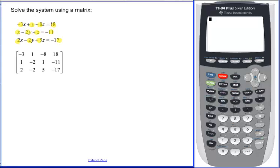And you can see 3, 1, 2. Here's negative 3, 1, 2. 1, negative 2, negative 2. Here's 1, negative 2, negative 2. 1, negative 8, 1, and 5, negative 8, 1, and 5. And then 18, negative 11, and negative 17. So here's our augmented matrix.